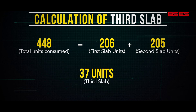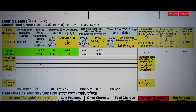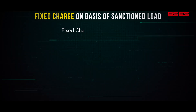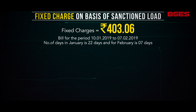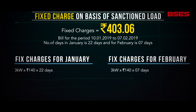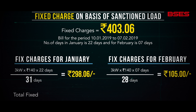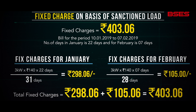Now let us understand how fixed charges are computed on the basis of sanctioned load. If the fixed charges are say rupees 403.06 for the bill period ranging from 10th January to 7th February, this is how it has been calculated. Let us also understand what exactly is behind the fixed charges that are paid by you.